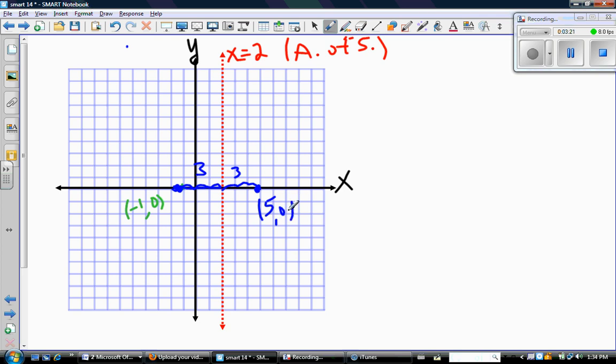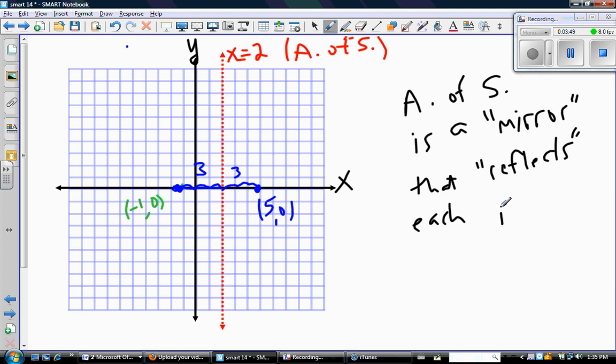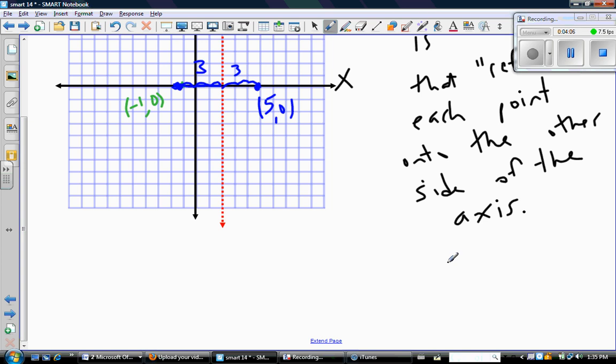So I don't know if your teacher needs you to do any more explanation than just what you've got on this diagram. You can certainly write the things we were talking about. For example, that the axis of symmetry is a mirror that reflects each point onto the other side of the axis.